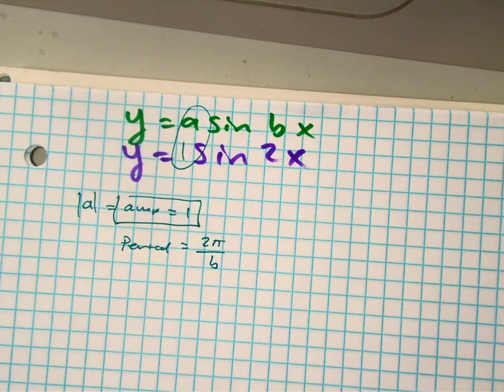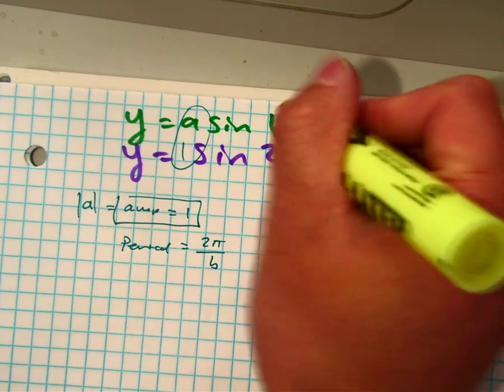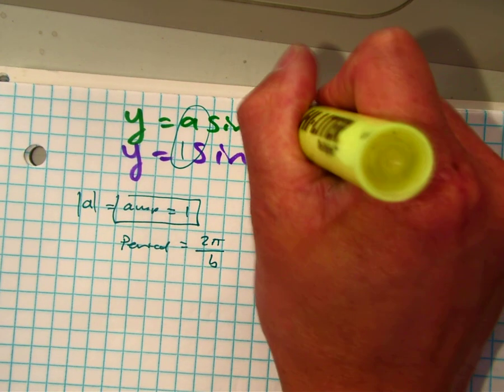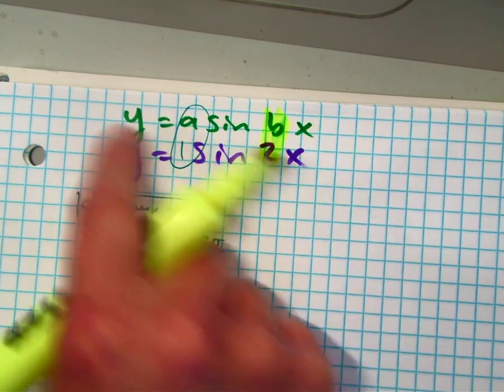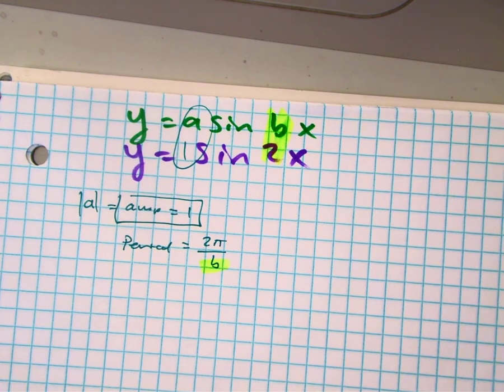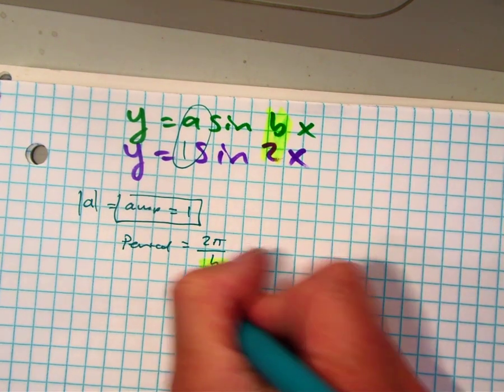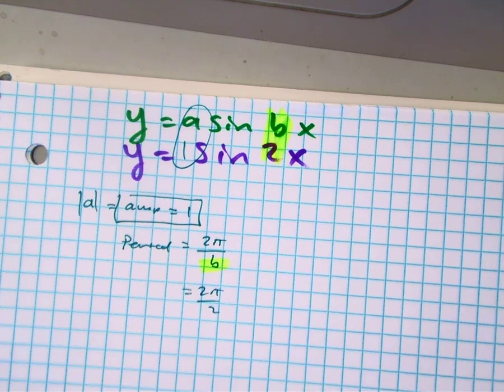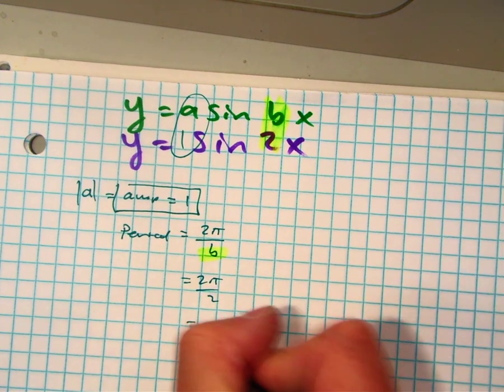So my b value is in front of the x. Do you see how I can easily identify that when I write the formula right above it? So now I just do a substitution: 2 pi over 2. And I can just simplify there. My answer is pi.